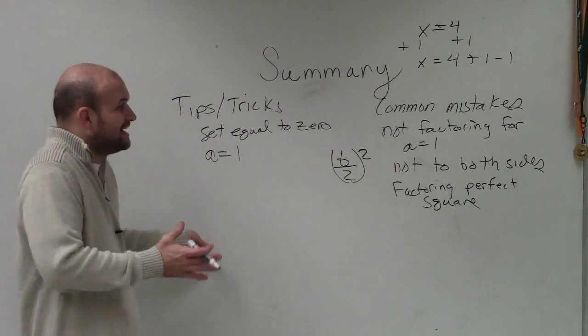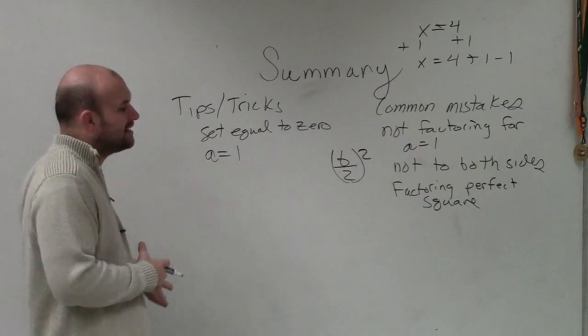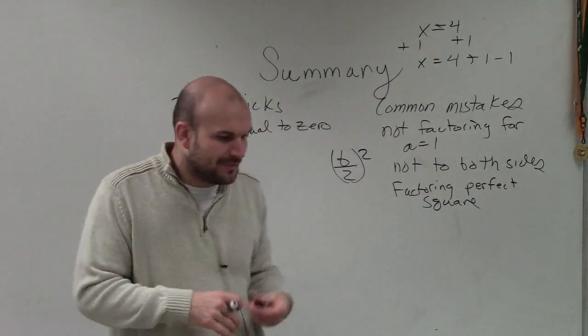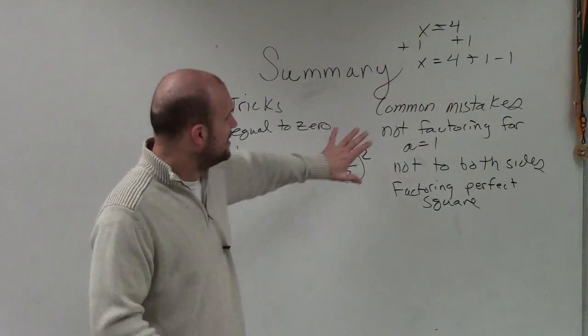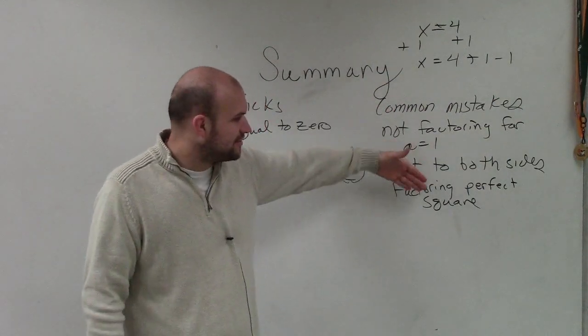So that's very important to make sure that you're doing that correctly. And really, as far as your tips and tricks, you set equals 0, make sure you get it on both sides. That's really about as much as I have. For the common mistakes, you're factoring your perfect squares.